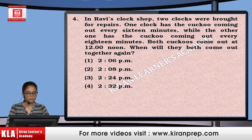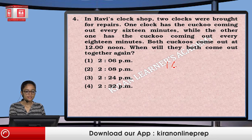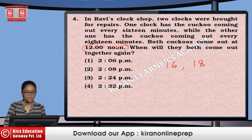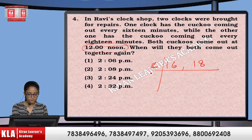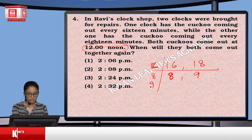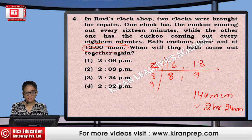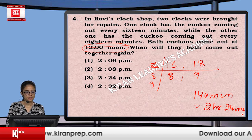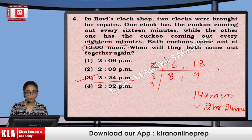Next, in Ravi's clock shop, two clocks were bought for repairs. One clock has a cuckoo coming out after every 16 minutes while the other comes out every 18 minutes. At 12 noon they came out together — at what time will they again come out together? We take the LCM of 16 and 18, which gives us 144 minutes, that is 2 hours and 24 minutes. So after 12, it will be 2:24 PM.